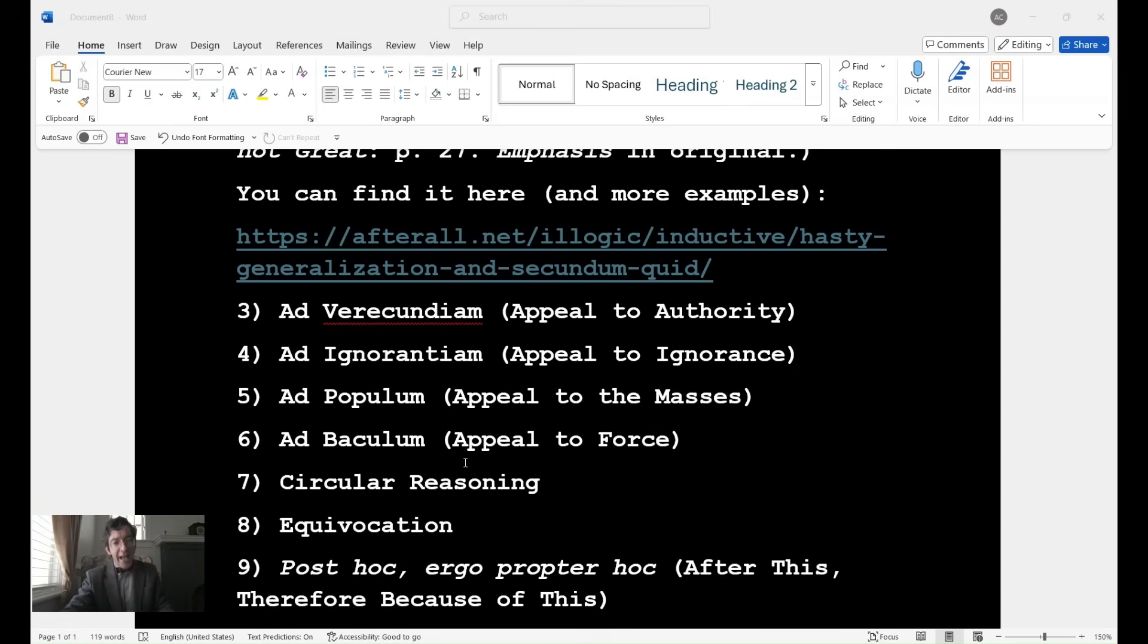You then have the ad ignorantiam, the appeal to ignorance. If you can't prove it's false, it must be true. By that logic, unicorns exist, the IRS is benevolent, and no liberal that I know of ever changed majors six times before settling on some strange other major. Case in point, you have the modern university's defense of administrative bloat. You hear things all the time like, there's no evidence these DEI provosts are not improving student outcomes. And there's no proof unicorns aren't auditing the budget either.